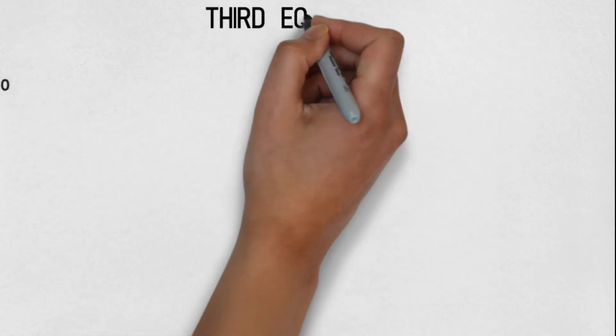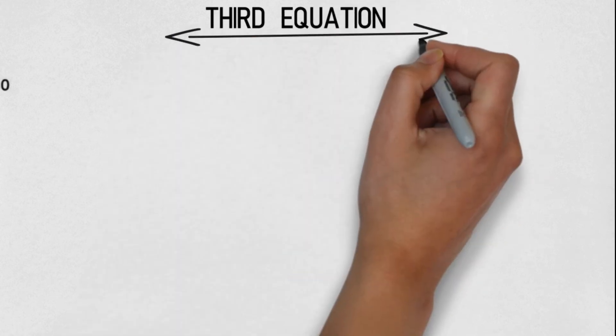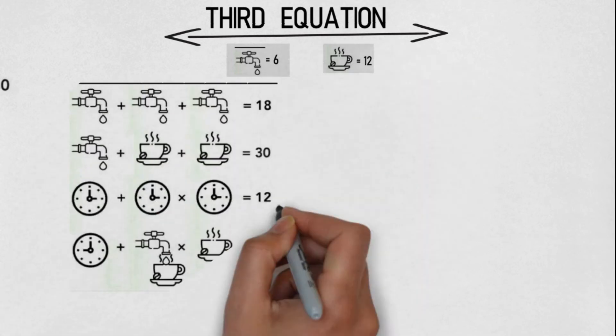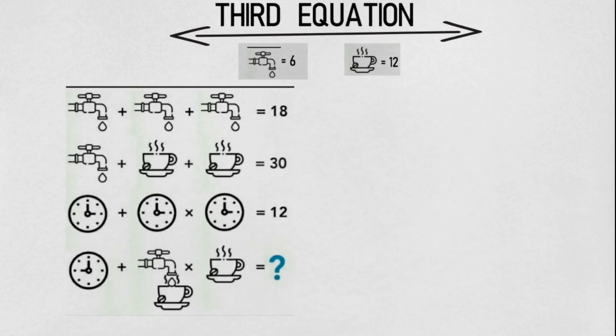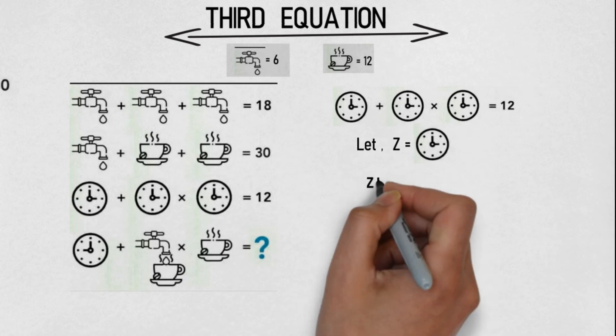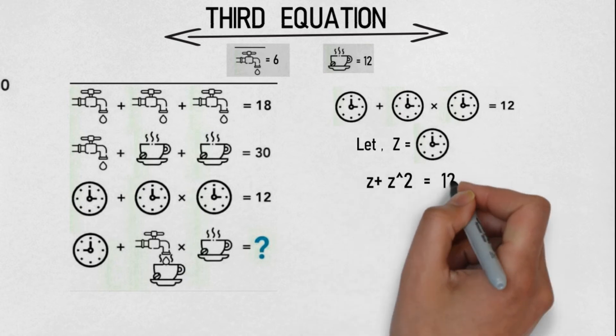Now jumping on to our third equation. Friends, in the third equation we have clocks. The third equation is sum of two clocks and there is a multiplication of two clocks. We consider Z equal to clock. Putting Z in the equation, it will become Z plus Z times Z is equal to 12. Z times Z will be equal to Z squared.